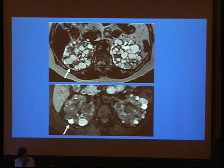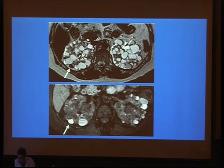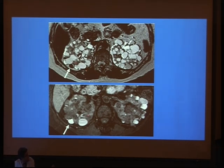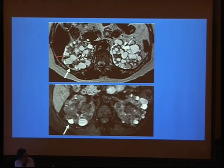On MRI, we can diagnose multiple cysts at the kidney and a complicated cyst inside. On T2-weighted and T1-weighted images, multiple cysts replace the kidney. A simple cyst appears at high signal intensity on T2 and low signal intensity on T1. While a complicated cyst shows low signal intensity on T2 and high signal intensity on T1 — this is a complicated cyst.